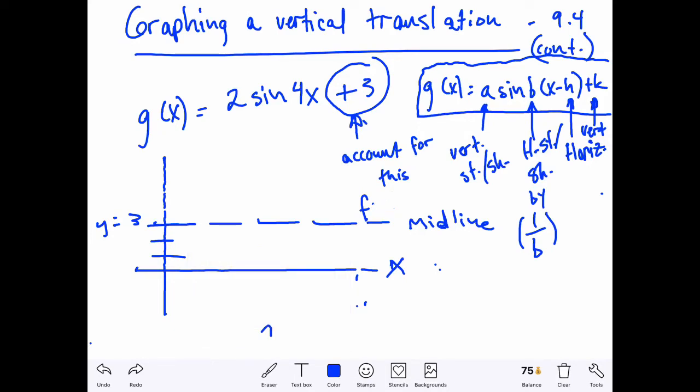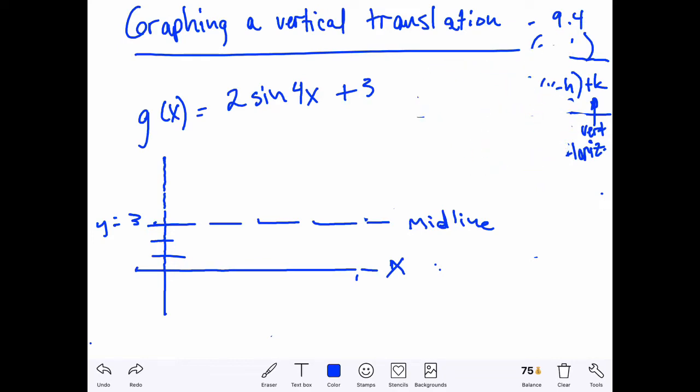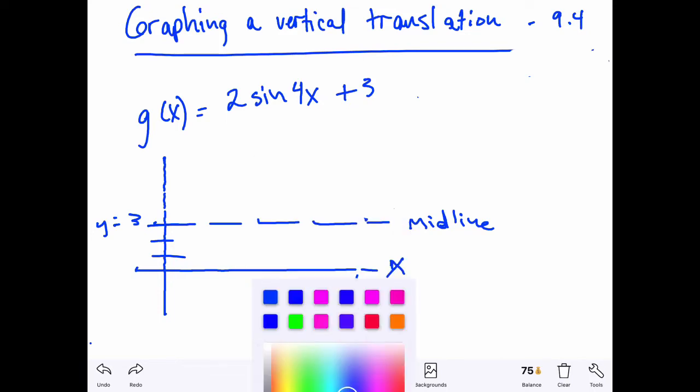Since it's plus three that means a vertical shift up three, so we shifted this thing called the midline. Now the midline is usually on our x-axis if we don't have a vertical translation.